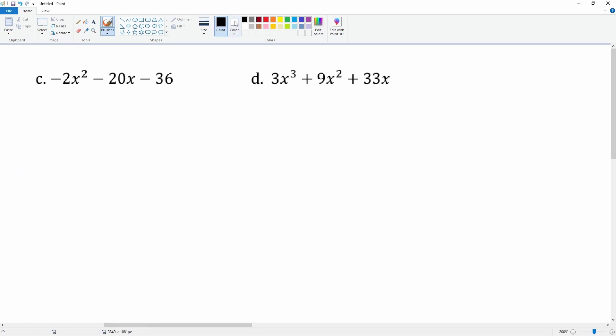Let's look at c: -2x² - 20x - 36. We break down -2x² into -1 times 2 times x times x. The -20x breaks down to -1 times 2 times 2 times 5 times x. And -36 breaks down to -1 times 6 times 6.